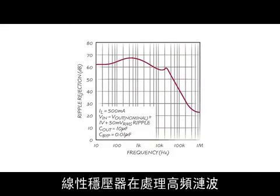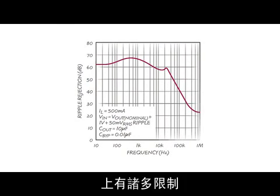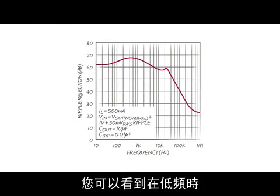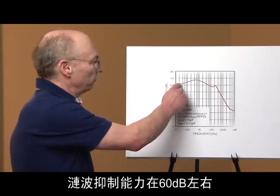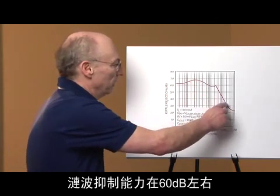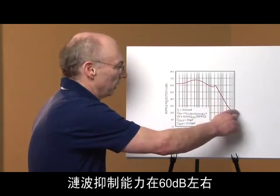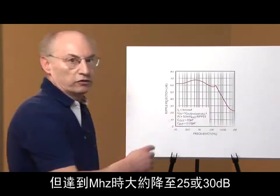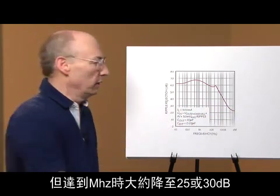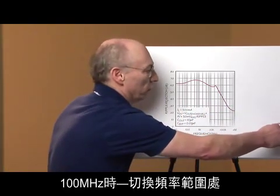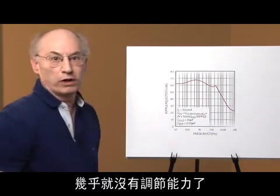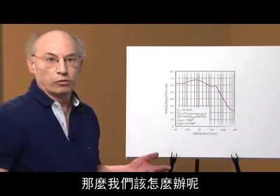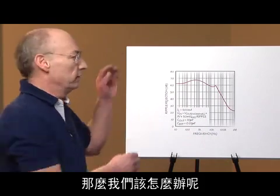The linear regulator has restrictions on its ability to regulate high-frequency ripple content. You can see the ripple rejection starts out at low frequency at around 60 dB, and by the time you get out to a megahertz, it's 25 or 30 dB. At 100 megahertz, which is where the switching content is, there's almost no regulation at all. What do we do about this?